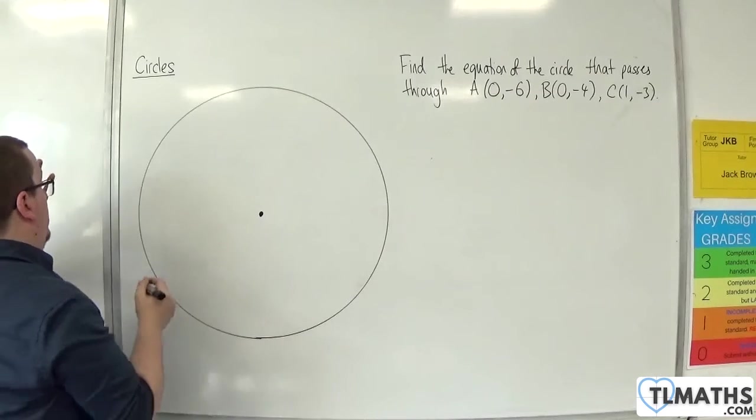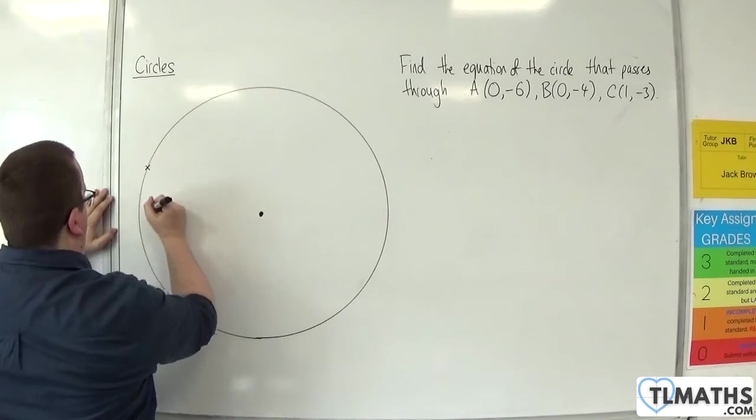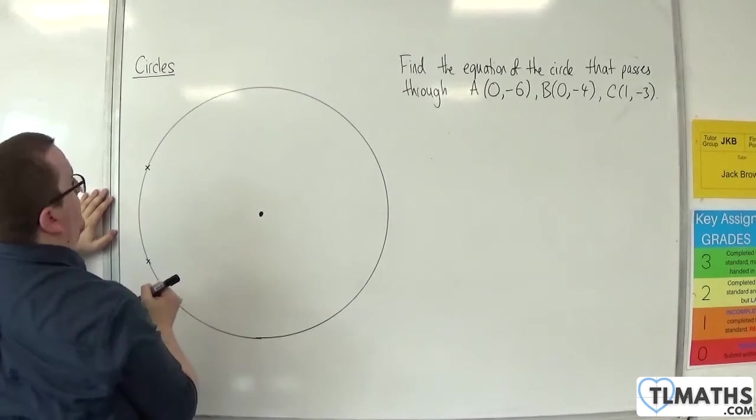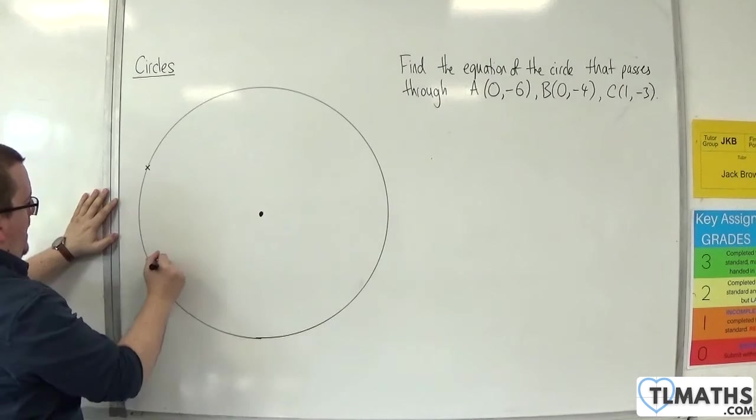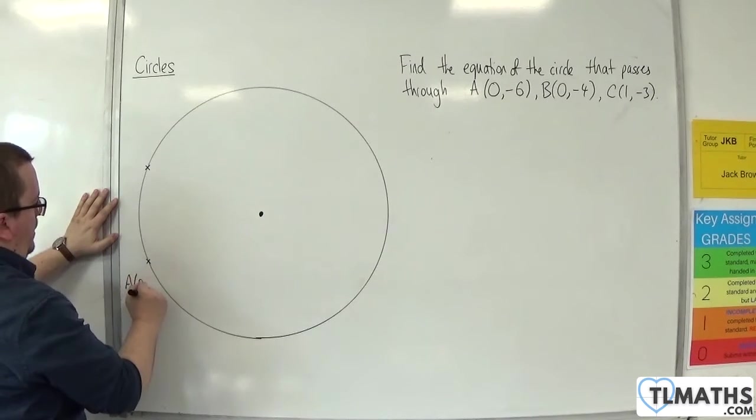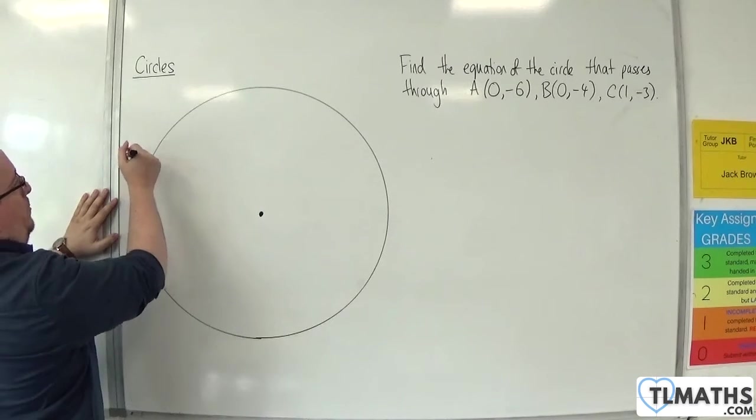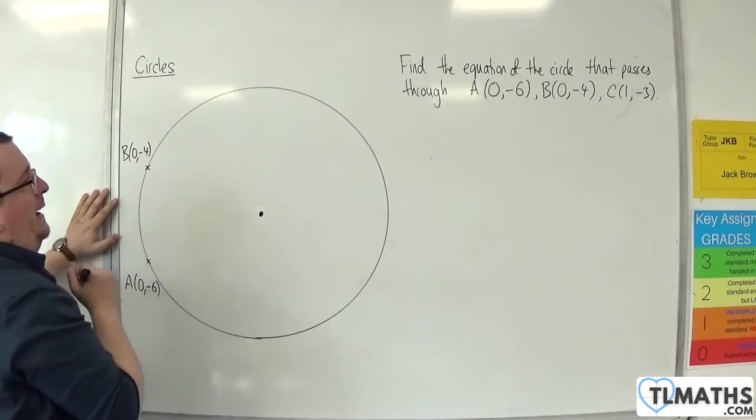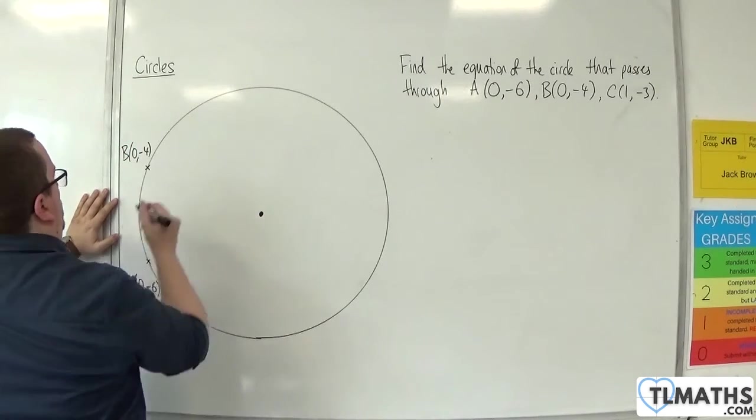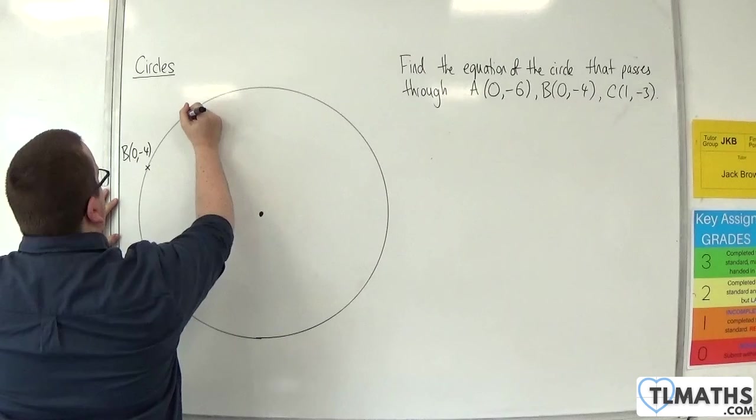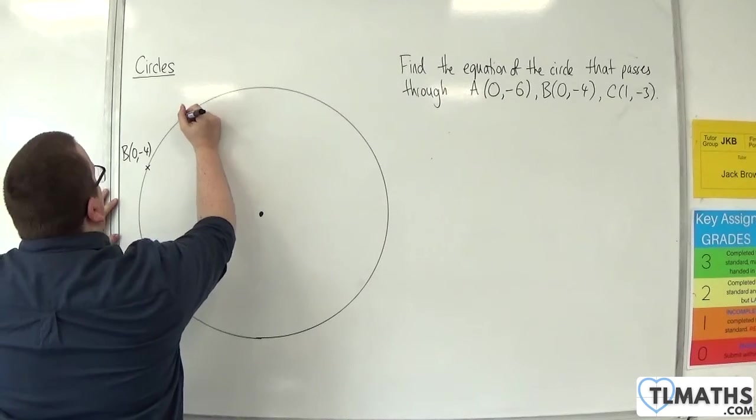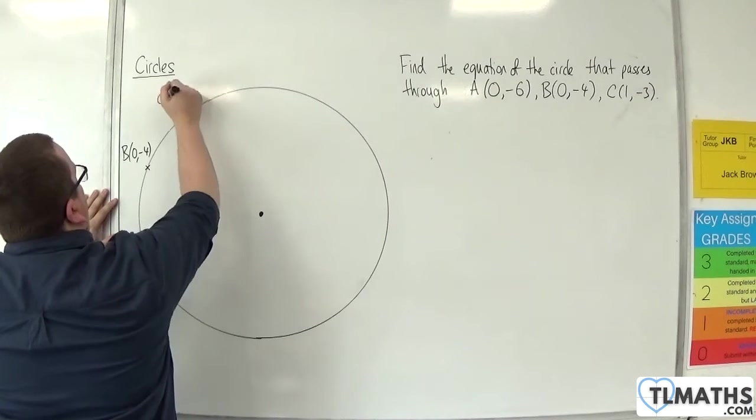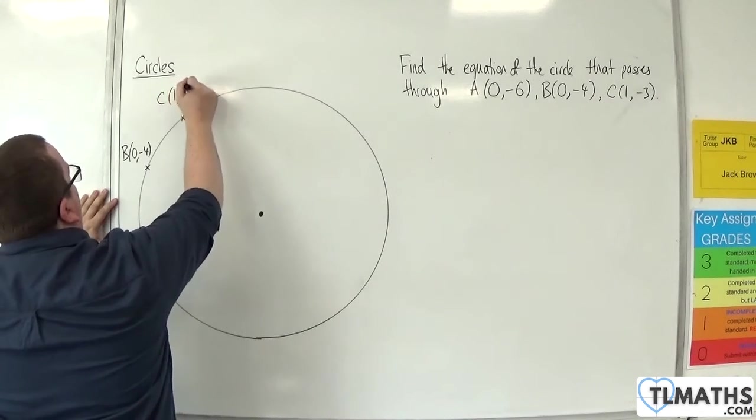So we're going to look at something like, let's pop there and there. So A here would be our (0, -6) and here's B, (0, -4), and C is 1 along and 1 up from there. So something like that. So here's C, (1, -3).